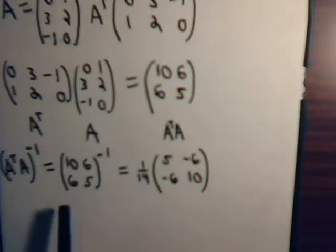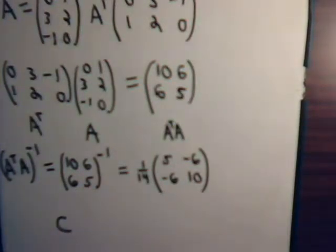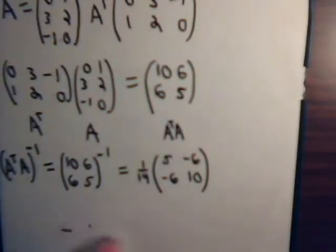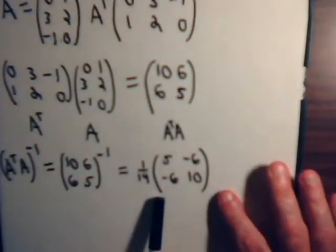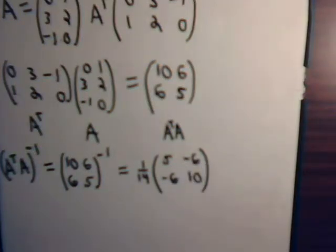Notice that A transpose A is a symmetric matrix — it always will be. And whenever you have a symmetric matrix C, its inverse is also symmetric. That is a fact we'll prove in a future video, but you can see it happening right here: this is a symmetric matrix, and its inverse is also a symmetric matrix.